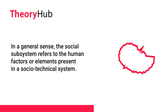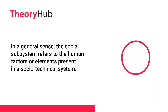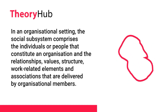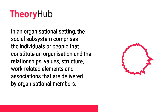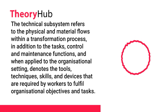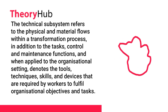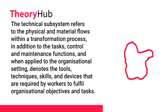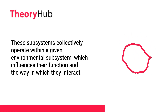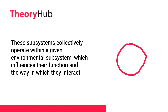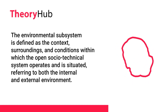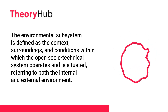The social subsystem refers to the human factors or elements present in a socio-technical system. In an organizational setting, it comprises the individuals that constitute an organization and the relationships, values, structure, work-related elements and associations delivered by organizational members. The technical subsystem refers to the physical and material flows within a transformation process, in addition to the tasks, control and maintenance functions, and denotes the tools, techniques, skills, and devices required by workers to fulfill organizational objectives. These subsystems collectively operate within a given environmental subsystem, which influences their function and the way they interact. The environmental subsystem is defined as the context, surroundings, and conditions within which the open socio-technical system operates, referring to both the internal and external environment.